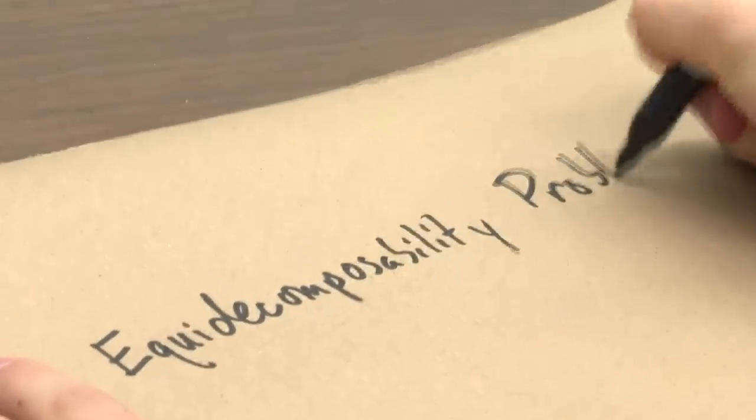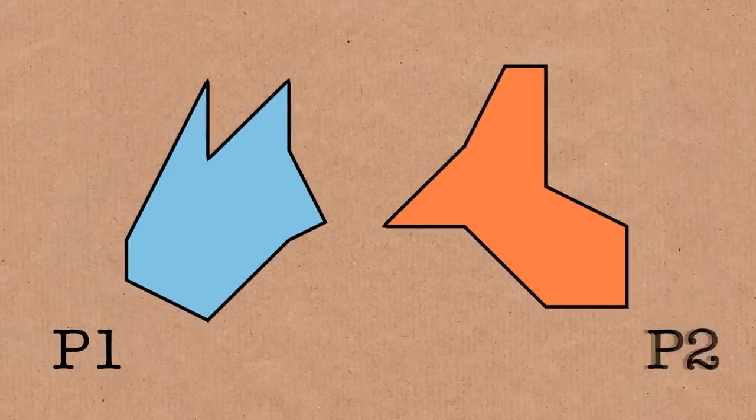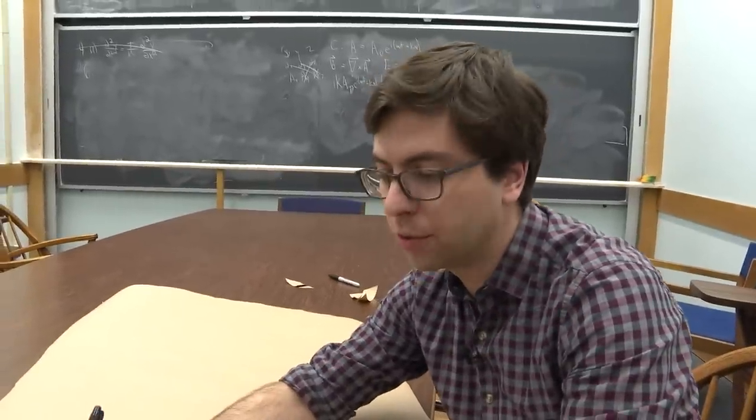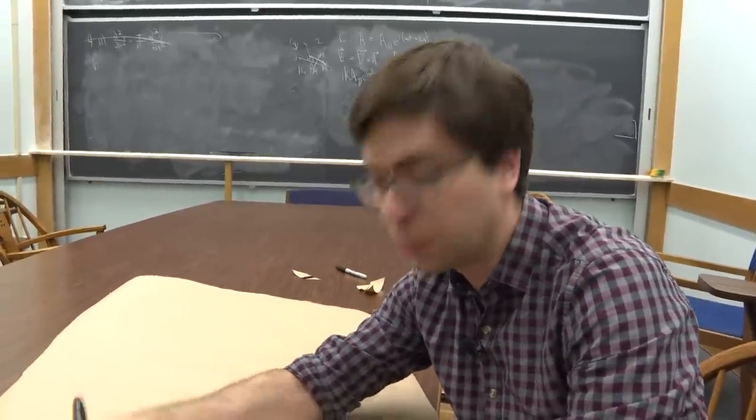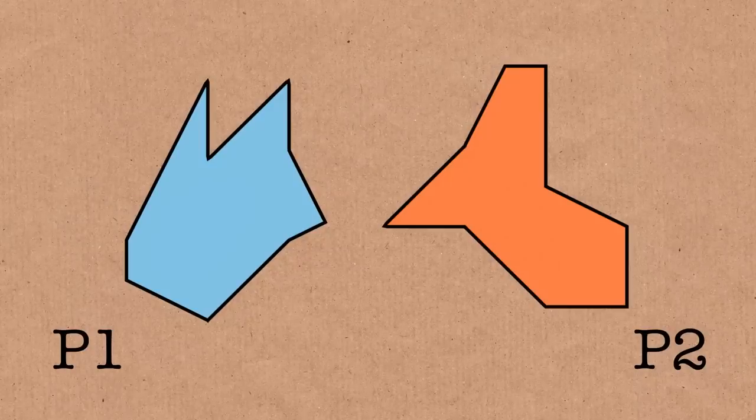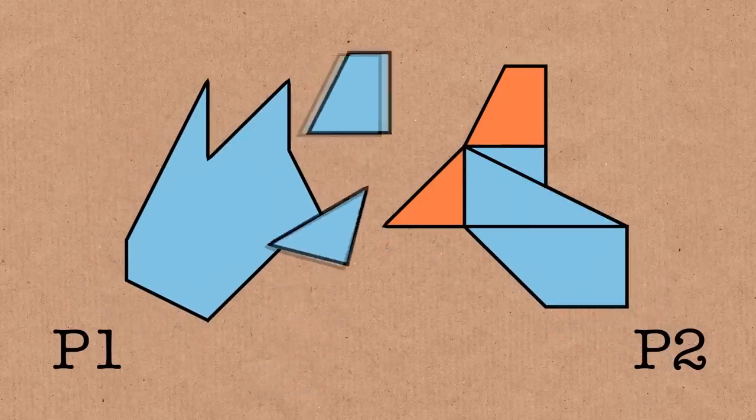I would call it Hilbert's third problem, but maybe let's call it the equi-decomposability problem. You have two polygons, P1 and P2. No rules about convex or concave, all you need is a finite number of straight lines which meet and form a closed figure. So here's two polygons, P1 and P2, and they have the same area.